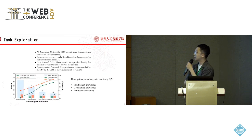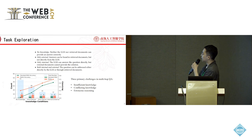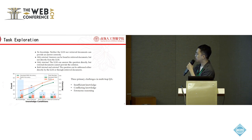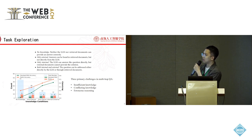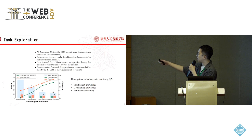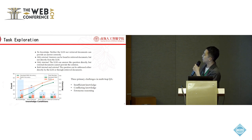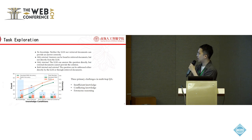We first conduct a case study on the HotpotQA dataset and classify the knowledge condition into four conditions: no knowledge, only external, only internal, and both internal and external. No knowledge means neither the language model nor retrieved documents can provide the correct answer. Only external means the answer can be found in retrieved documents but not directly from the language model. Only internal means the language model can answer directly. As knowledge becomes more sufficient, model accuracy grows. We summarize three primary challenges in multi-hop QA: insufficient knowledge, conflicting knowledge, and erroneous reasoning.